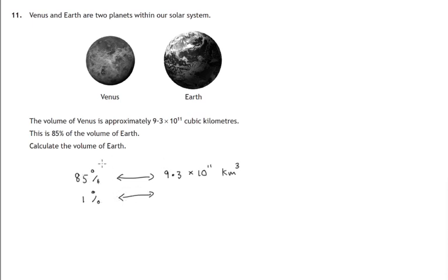Well if we know 85% to get 1% that's an 85th, we divide by 85. So it would be 9.3 times 10 to the power 11 divided by 85.